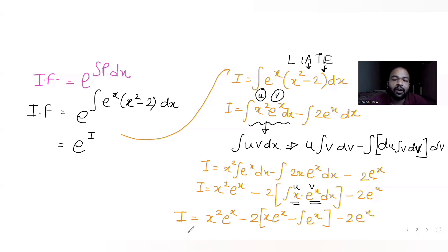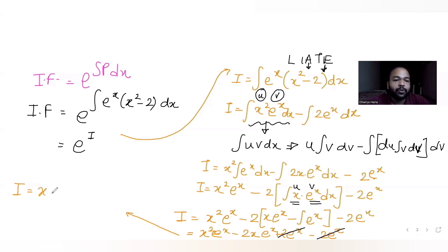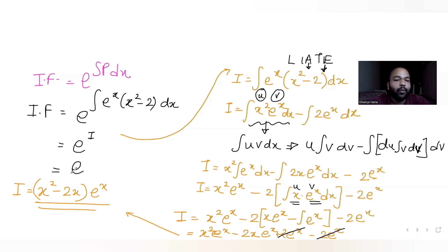Simplifying: I = x²·e^x − 2x·e^x + 2·e^x − 2·e^x. The +2·e^x and −2·e^x cancel, leaving I = x²·e^x − 2x·e^x = e^x(x²−2x). Therefore the integrating factor is e^I = e^(e^x(x²−2x)).